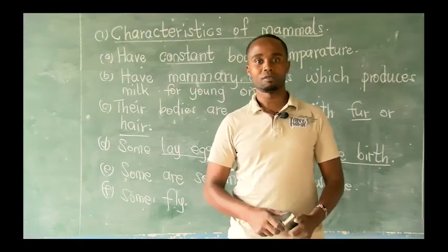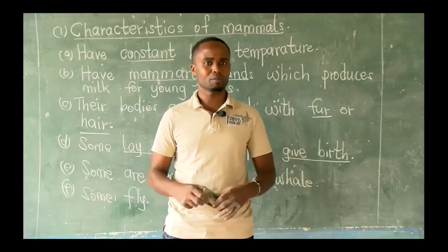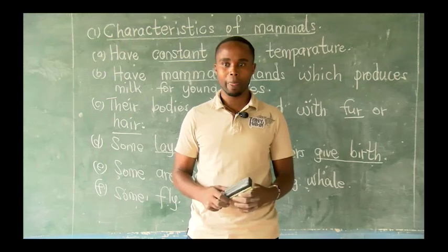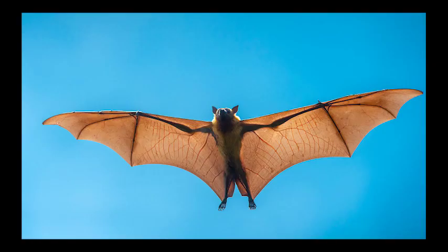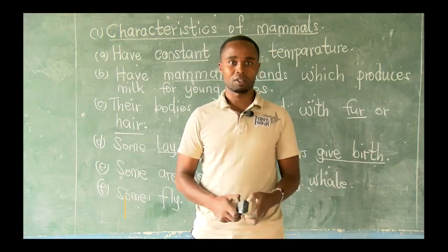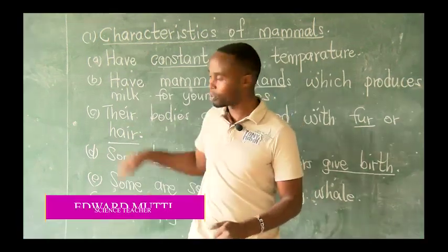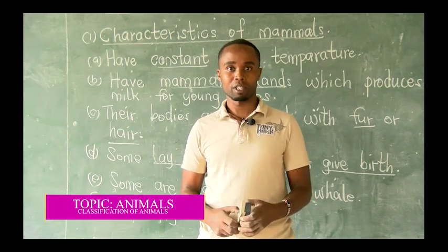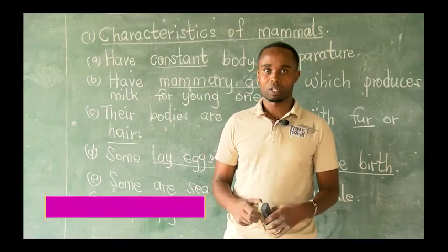Then another characteristic is that some mammals can fly. Somebody give us an example of a flying mammal. We have a bat and we also have one known as a flying fox — those are flying mammals. We have others that walk, but those two are flying mammals. Make sure that you remind yourselves of these characteristics of mammals.